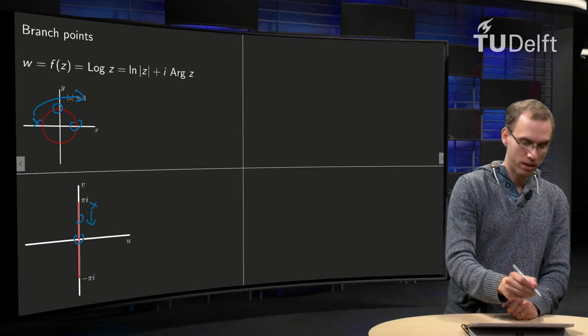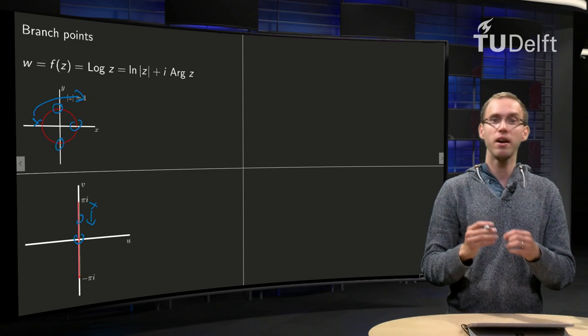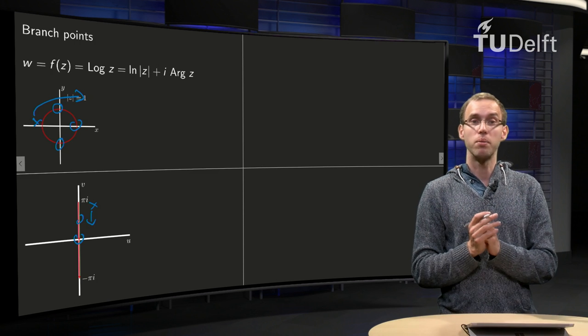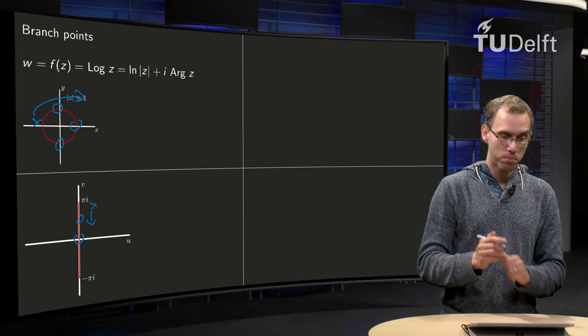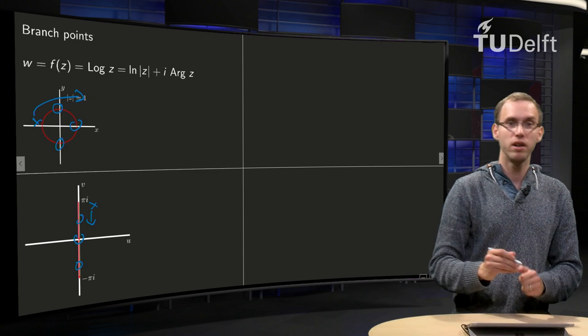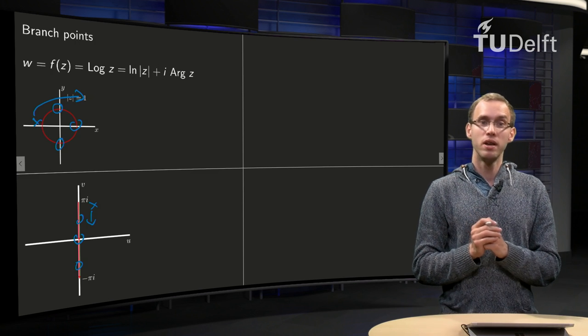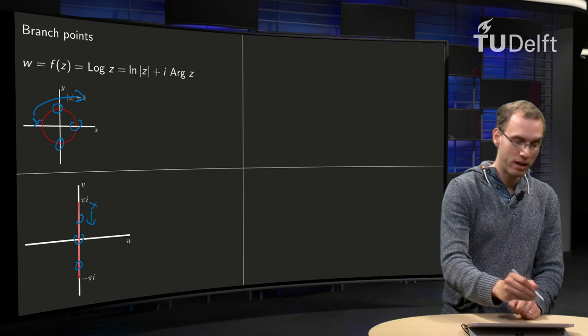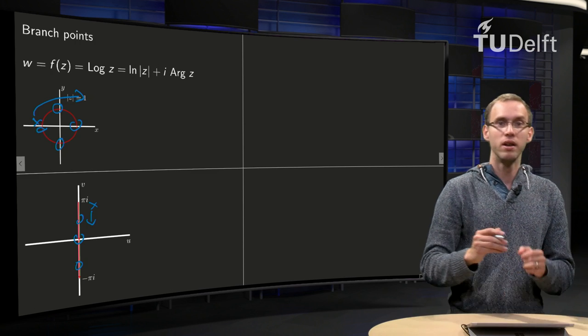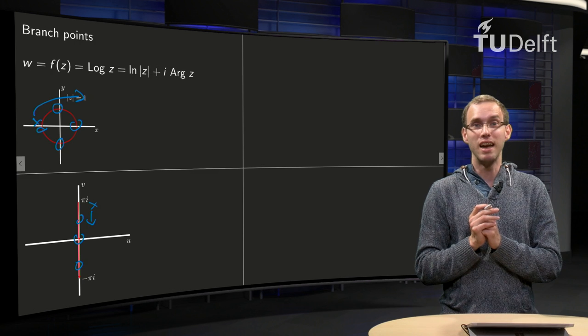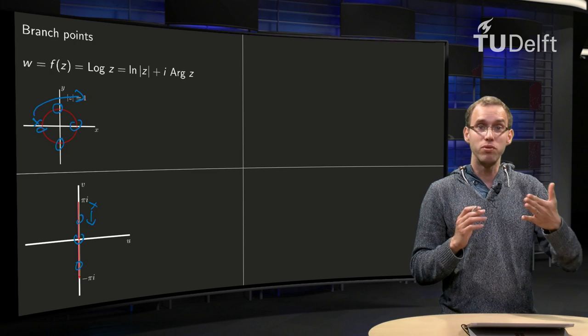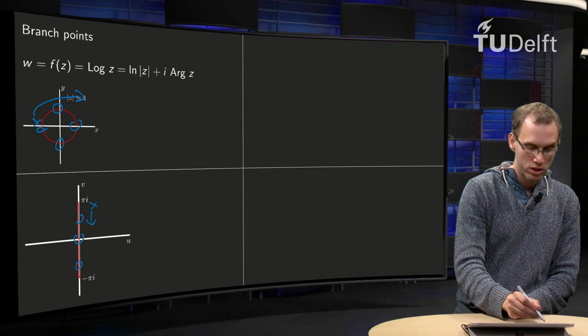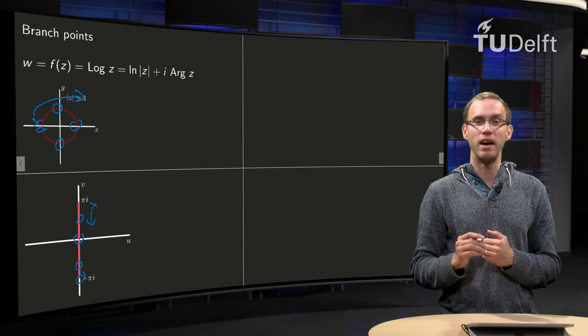We continue travelling, then we get over here, where the capital argument equals minus pi over 2, so that is somewhere over here in the codomain for w. And finally we approach again in the domain the same point here. When we approach again the negative imaginary axis, our argument will approach minus pi, so we approach minus pi i.